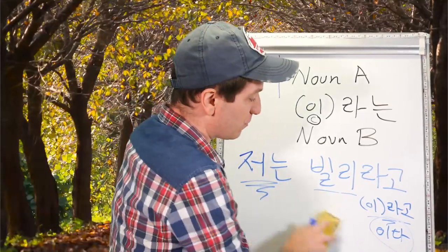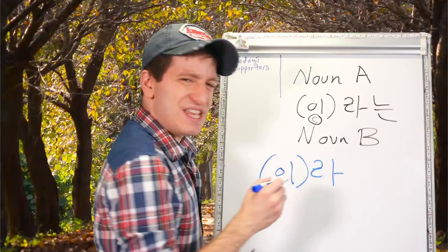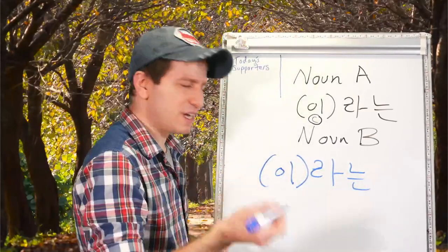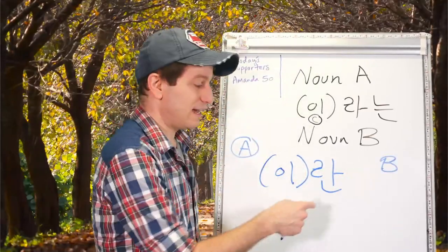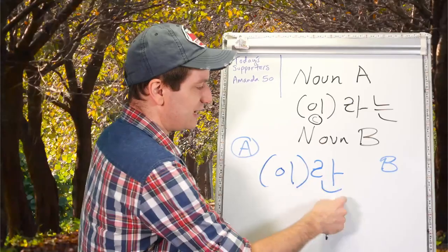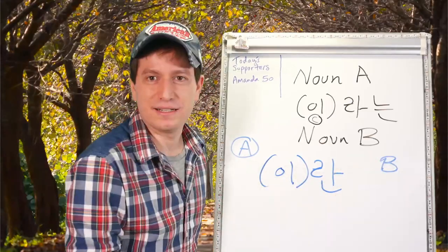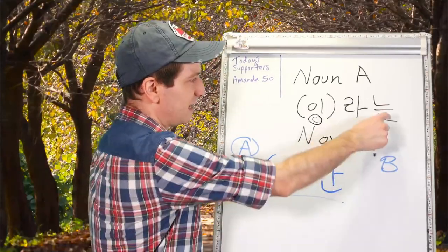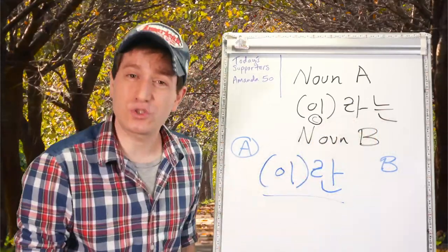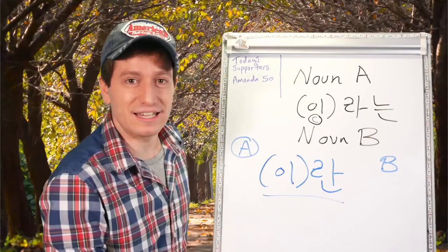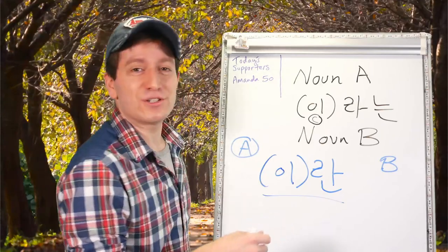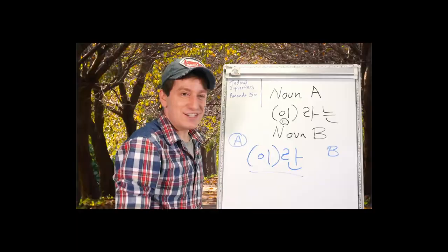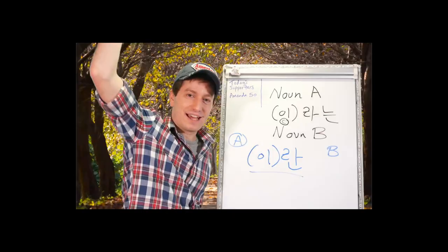There's another common way this form can shorten: 이란. 이란 is the shortened version of 이라는, which is the shortened version of 이라고 하는. It doesn't really go further than that — it's shortening all the way down. So let's do our first example.